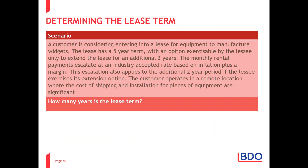Here's a scenario: a customer leases equipment to manufacture widgets under a five-year term with a lessee option to extend for two years. Monthly rental payments escalate at an industry-accepted rate. The customer operates in a remote location where shipping and installation costs are significant. If the lease ended after five years, significant extra costs would be incurred to get replacement equipment. Therefore, it's reasonably certain the lessee would extend, making the lease term seven years.